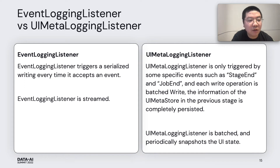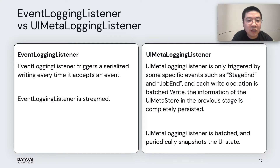So how do we persist this UI meta file? We use a UI meta log listener. It's very similar to the event log listener. The event log listener triggers a serialized write every time it accepts an event, so it is streaming. But the UI meta listener is only triggered by specific events such as stage end and job end, and this writing is batched. So the UI meta listener periodically snapshots the UI status.